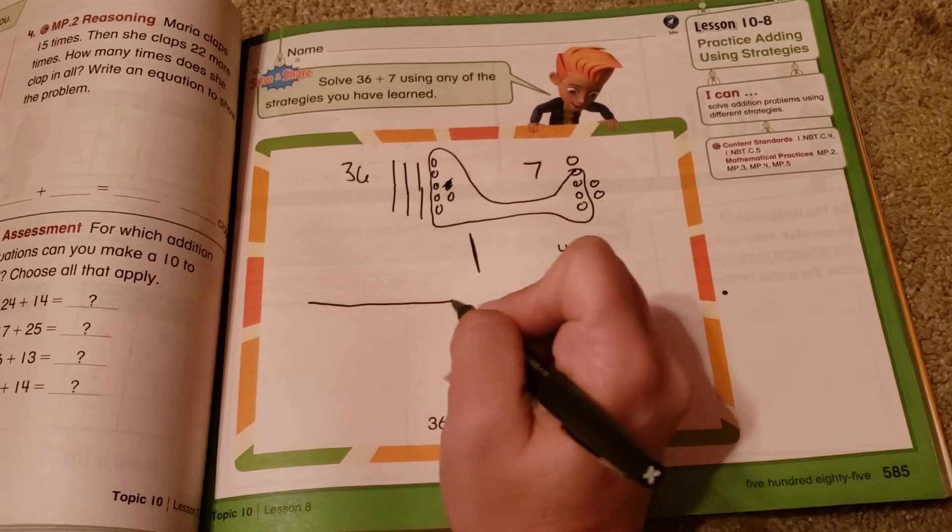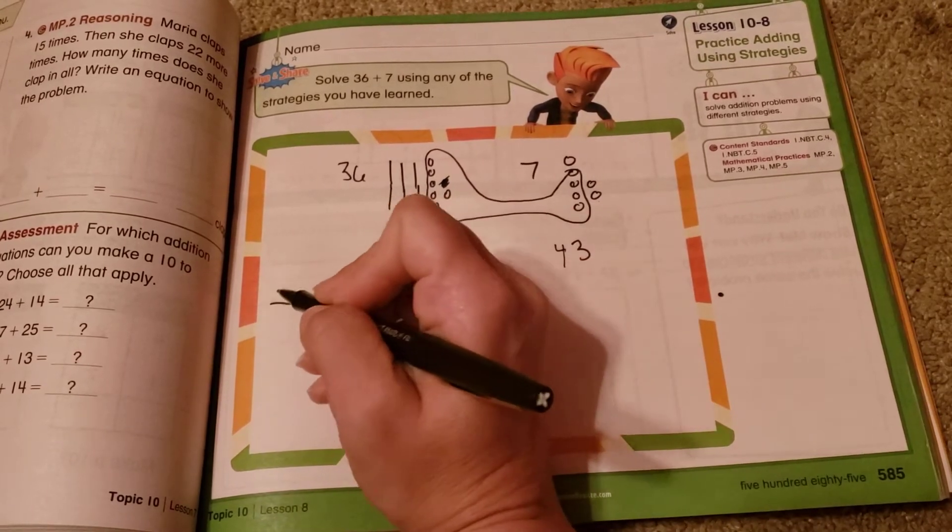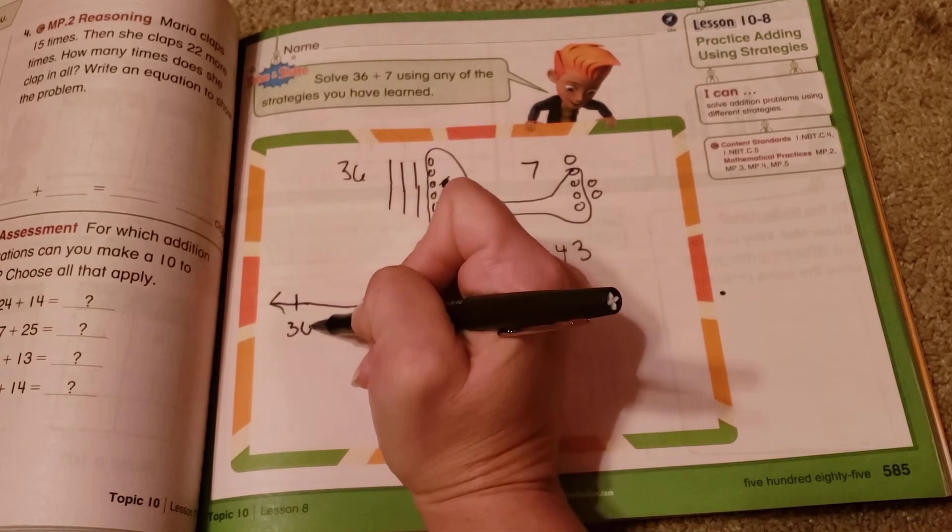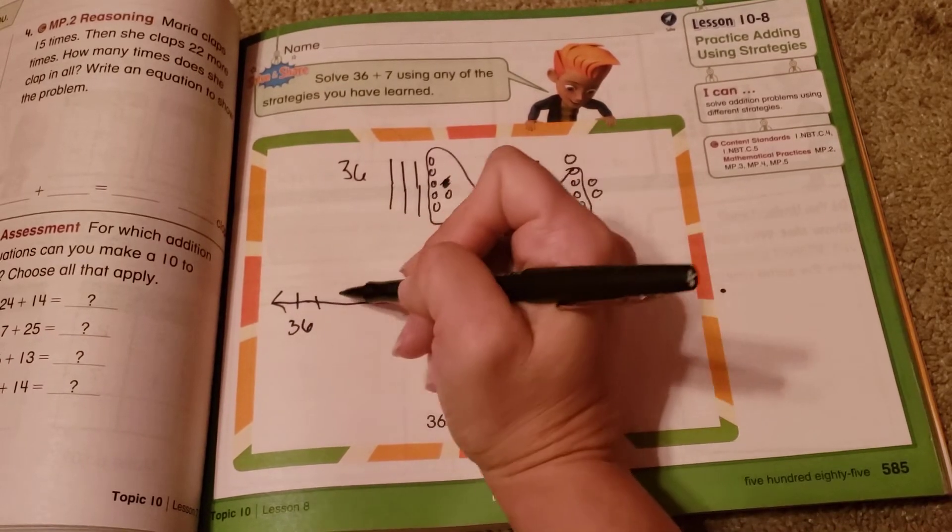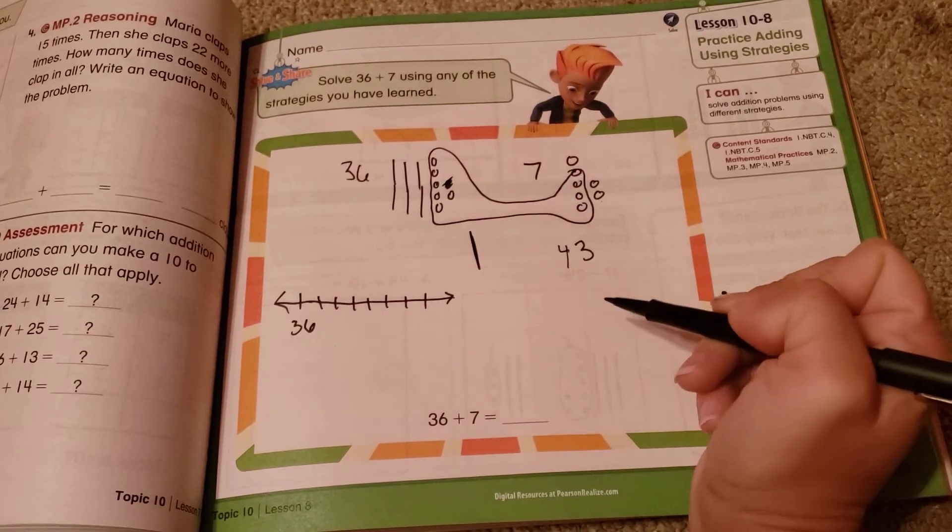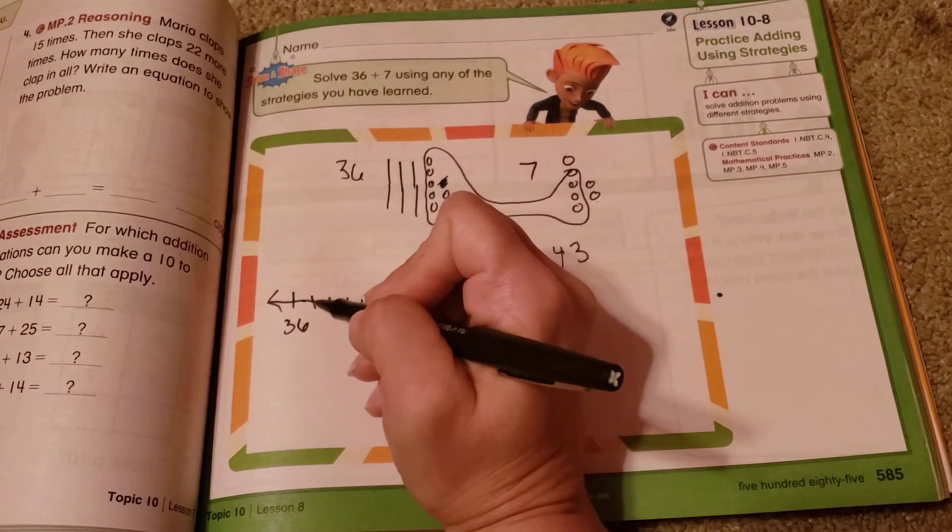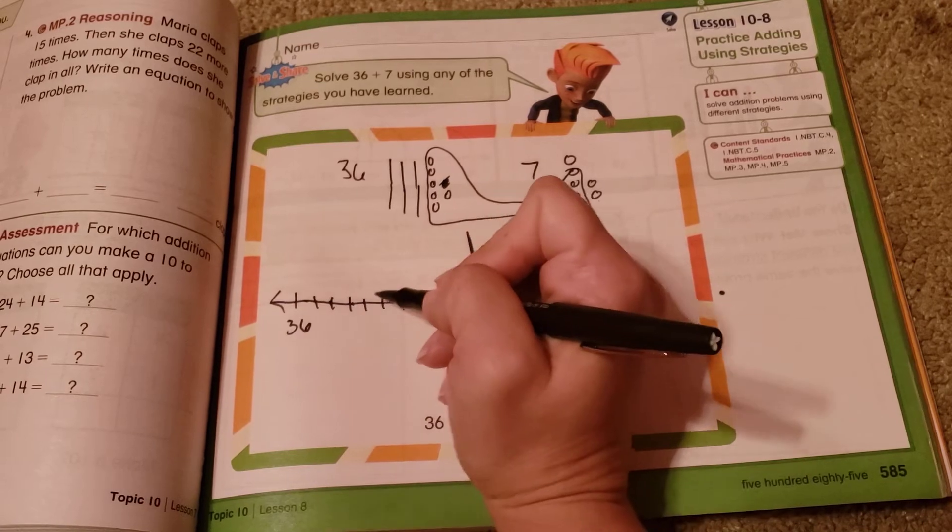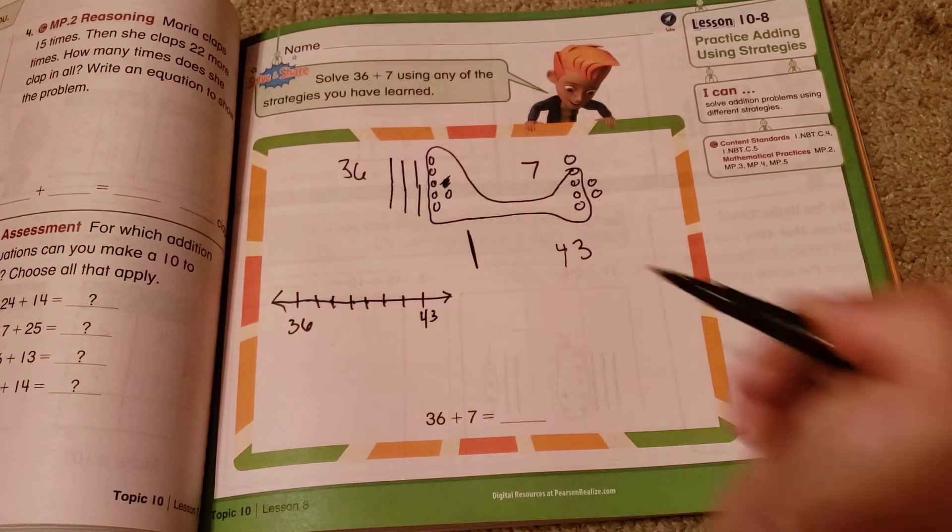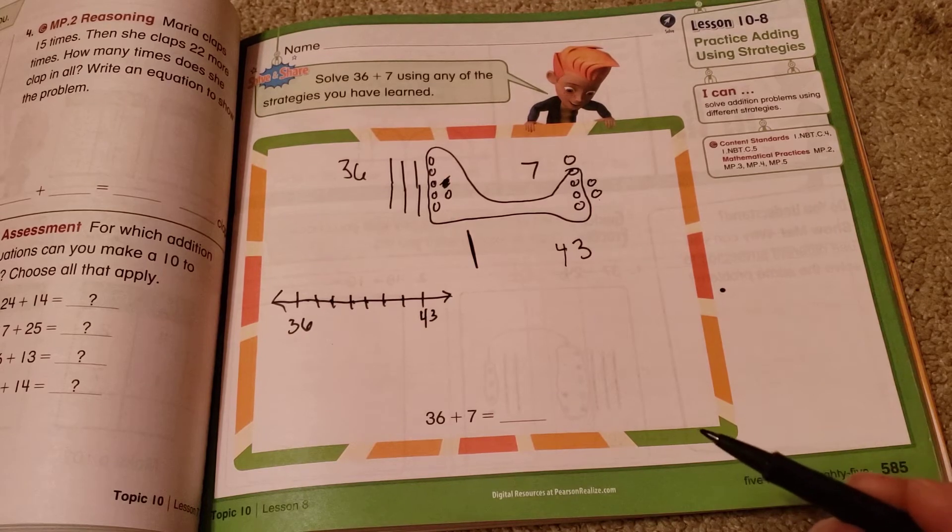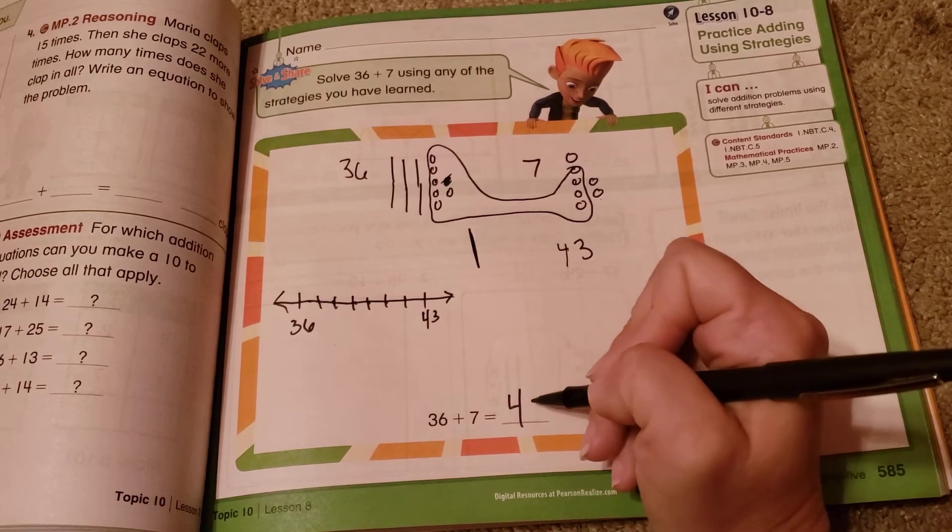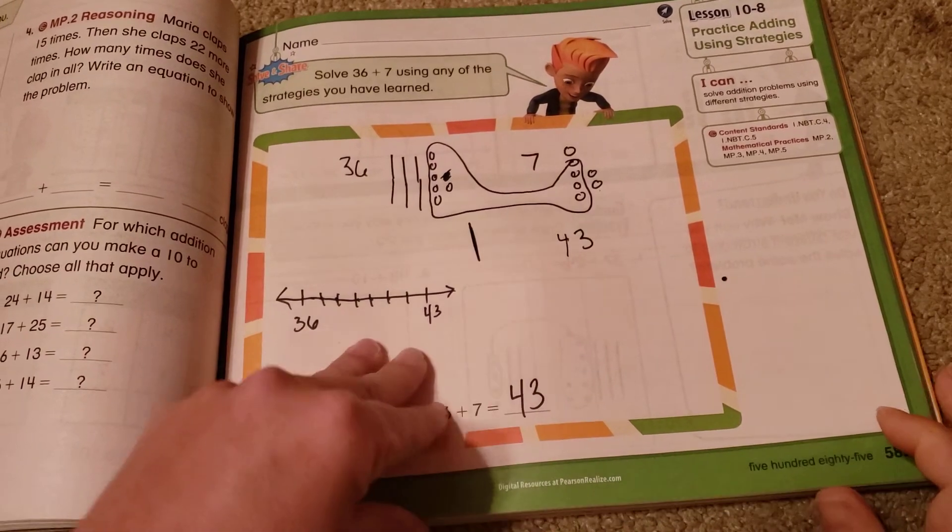Could also use an open number line. I can put my 36 there. And then I can just fill in the rest of the numbers: 1, 2, 3, 4, 5, 6, 7. And then I can just fill them in: 37, 38, 39, 40, 41, 42, 43. Either way, it gets the right answer. So it doesn't really matter which strategy you use, just as long as you know that there are different strategies to use.